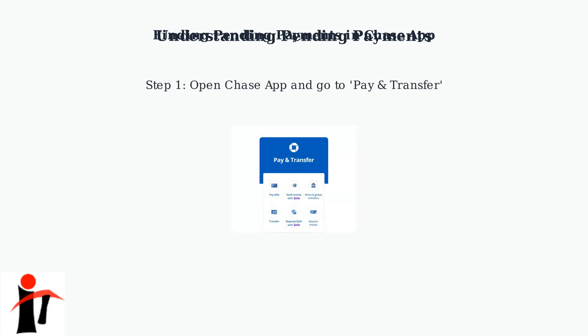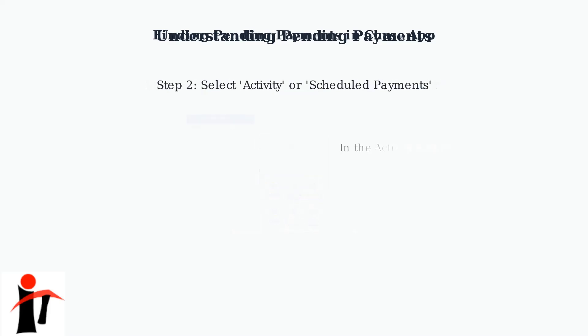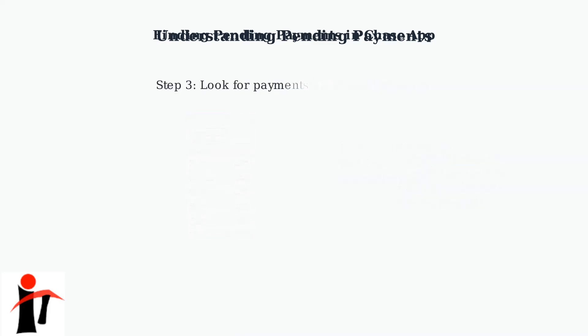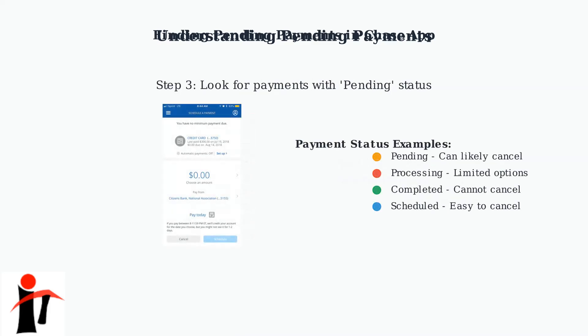To check for pending payments, you'll need to navigate through the Chase mobile app. First, open the app and navigate to the Pay and Transfer section — your main hub for all payment-related activities. Next, look for the Activity section or Scheduled Payments option, where you'll find a comprehensive list of all your transactions, including pending ones. Finally, look for payments with a pending or scheduled status. The status indicator will help you understand what actions are available for each payment.